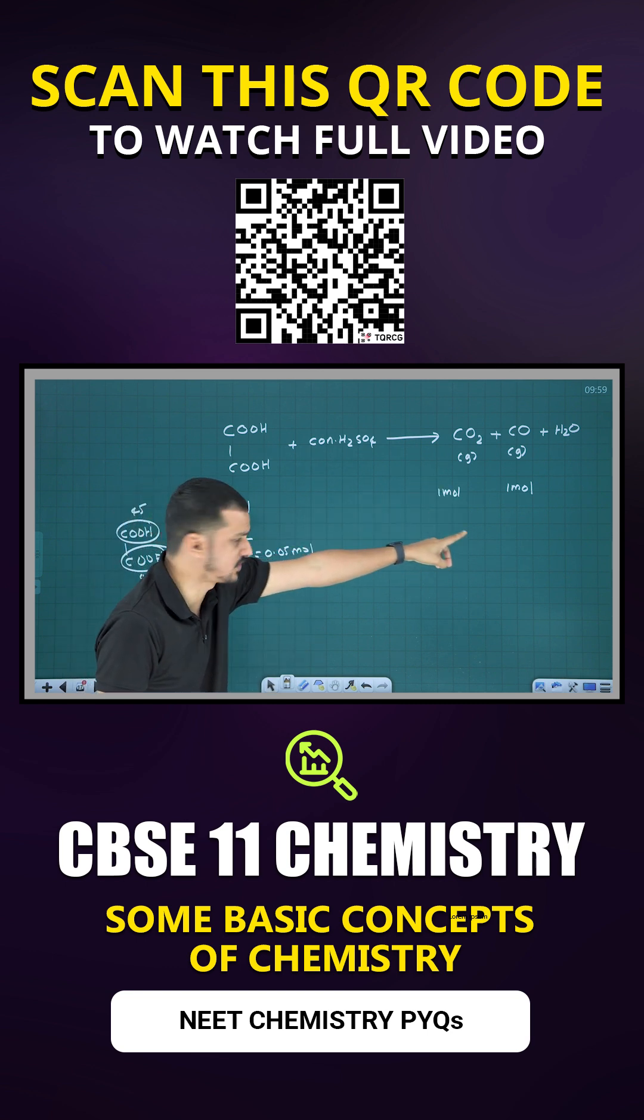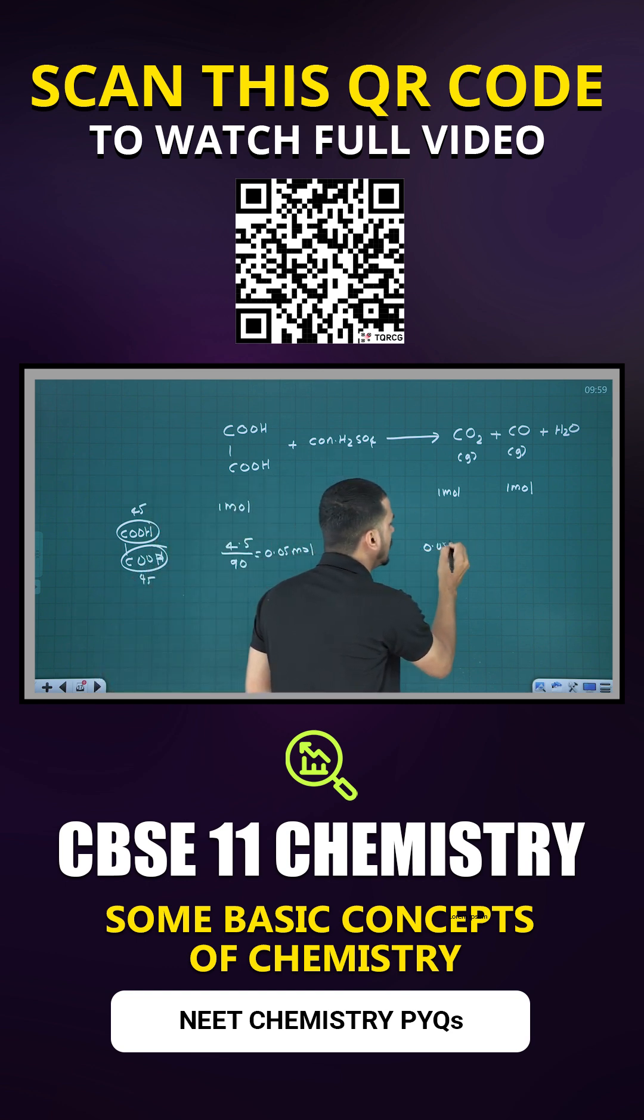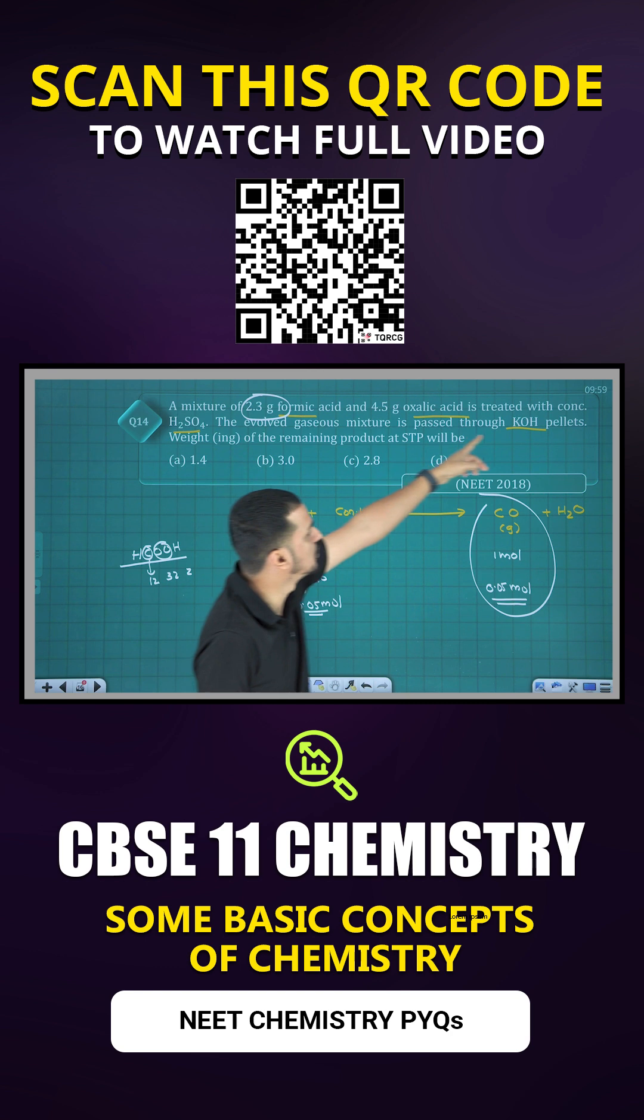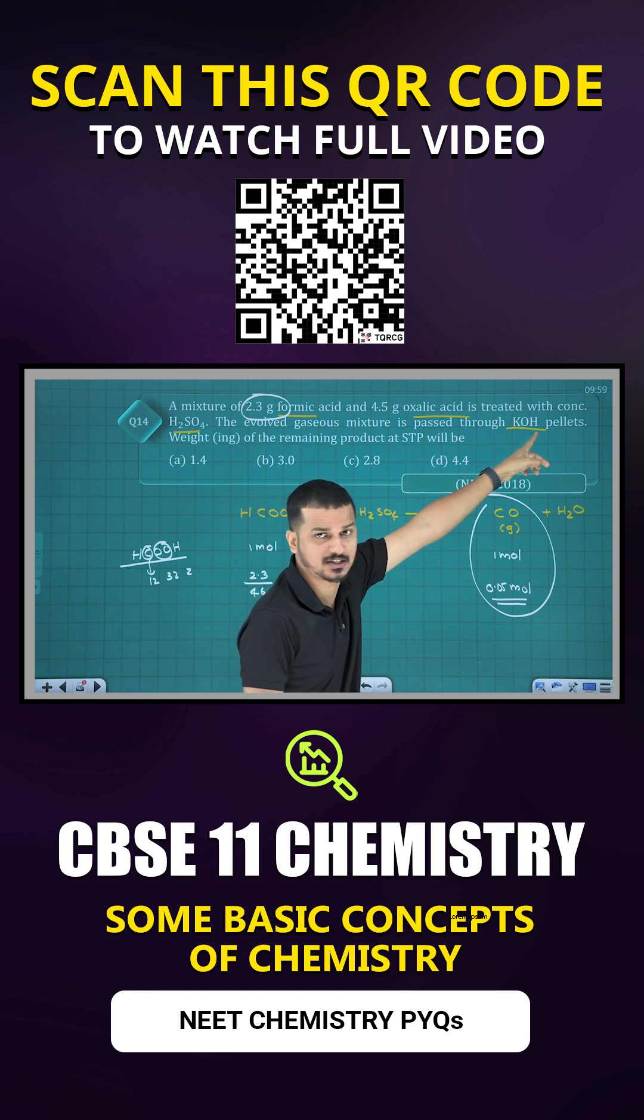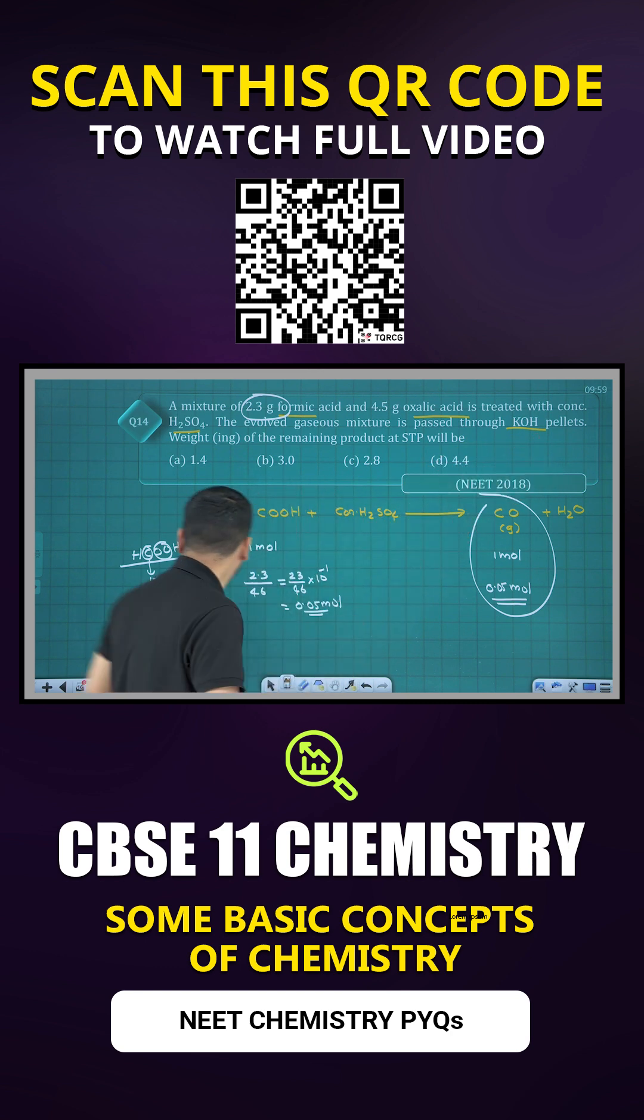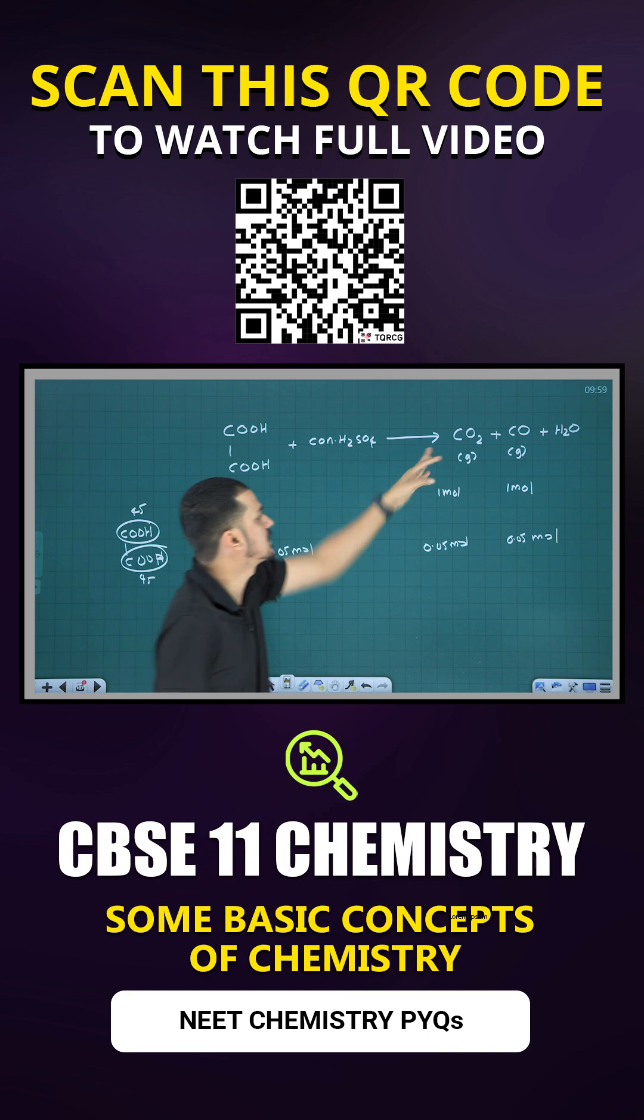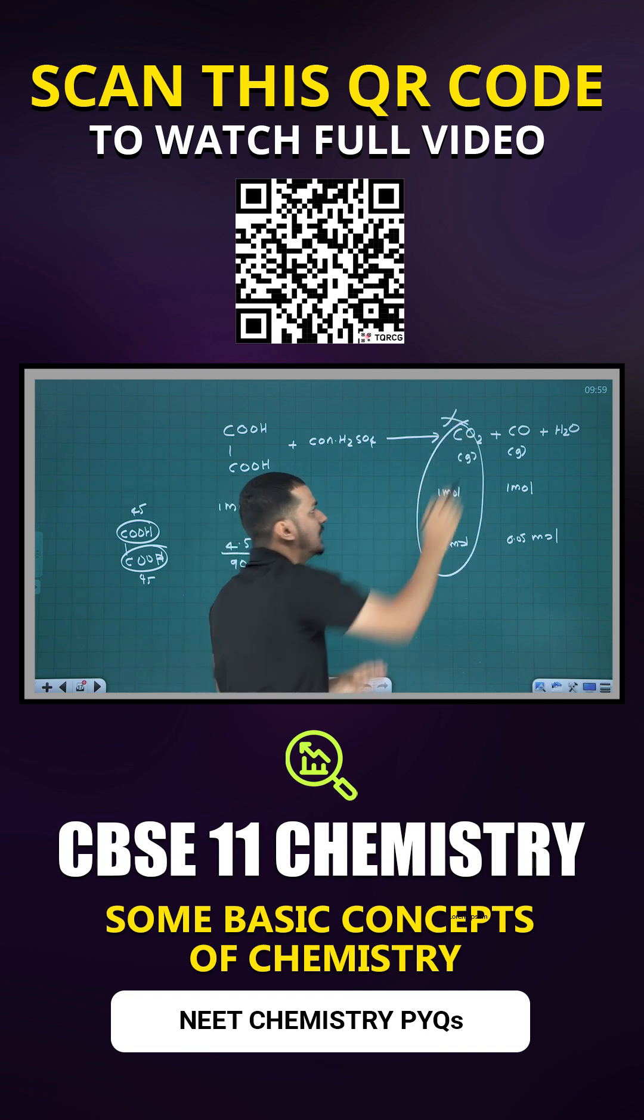So 0.05 mol means 0.05 mol carbon dioxide and 0.05 mol carbon monoxide. But you are passing it through, treating it with KOH. KOH pellet will absorb the carbon dioxide, so it won't be there.